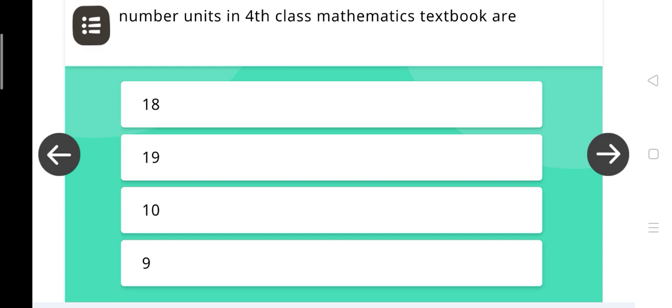Number of units in 4th class mathematics textbook are, 18, 19, 10, 9. And the right answer is, 10.